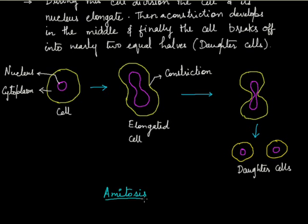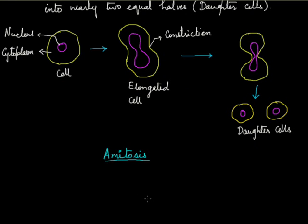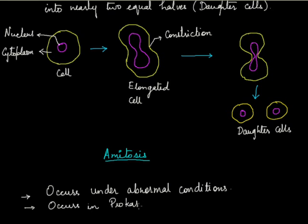Now the question arises, where does this type of cell division occur? If we talk about occurrence, this type of cell division is a very simple direct method, and it generally occurs during abnormal conditions. If we talk about specific examples, it occurs in prokaryotes, and an example of prokaryotes is bacteria. Prokaryotes contain primitive nucleus, so amitosis does occur in prokaryotes.